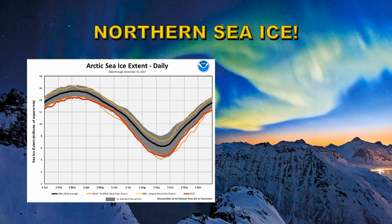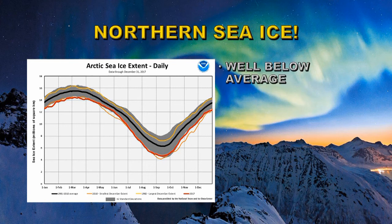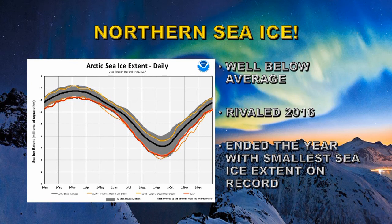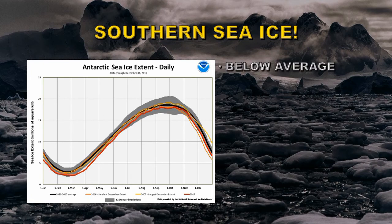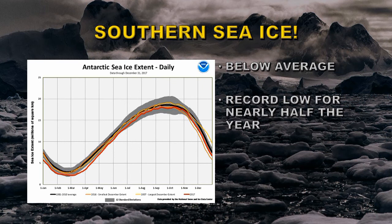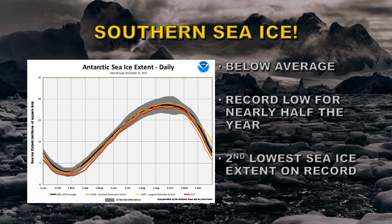No picture of climate would be complete without checking the situation with the ice at the two poles. If we look at the Arctic sea ice extent, we see that it was well below average — the average is shown by the black line, and the dark red line is 2017 throughout the year. For most of the year it was rivaling 2016, which was the lowest sea ice extent on record, and it ended the year with a lower sea ice extent than 2016. The Antarctic ice situation was very similar — well below average. It was at record low levels for nearly half the year and ended the year as the second lowest sea ice extent on record.